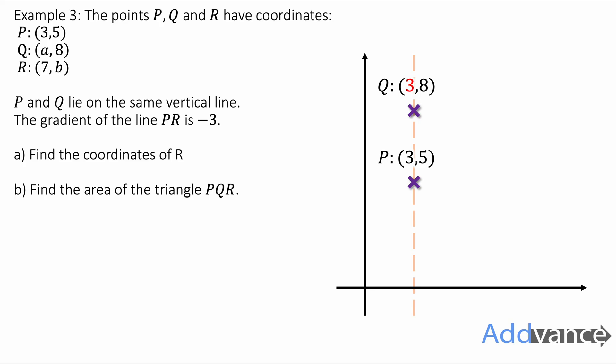Now we've also got a point R, which has an x-coordinate of 7. So it's a bit further across. It's somewhere over here. But it might be higher, it might be lower. We don't really know where R is yet. We just know that it's got an x-coordinate of 7. We do know, though, that P to R has a gradient of -3.